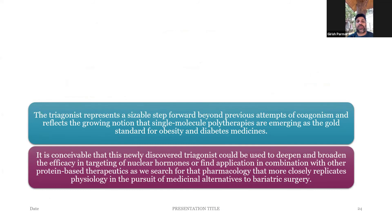Triple agonist or tri-agonist definitely represents a sizable step forward beyond previous attempts at co-agonism and reflects the growing notion that single-molecule polytherapies are emerging as the gold standard for treatment of diabetes as well as obesity. It is conceivable that this newly discovered tri-agonist or triple therapy could be used to deepen and broaden efficacy in targeting nuclear hormones or find application combining with other protein-based therapies. As we search for newer drugs which improve the metabolic milieu and can be offered as alternatives to bariatric surgery — which in some patients may not be possible due to cost economics.